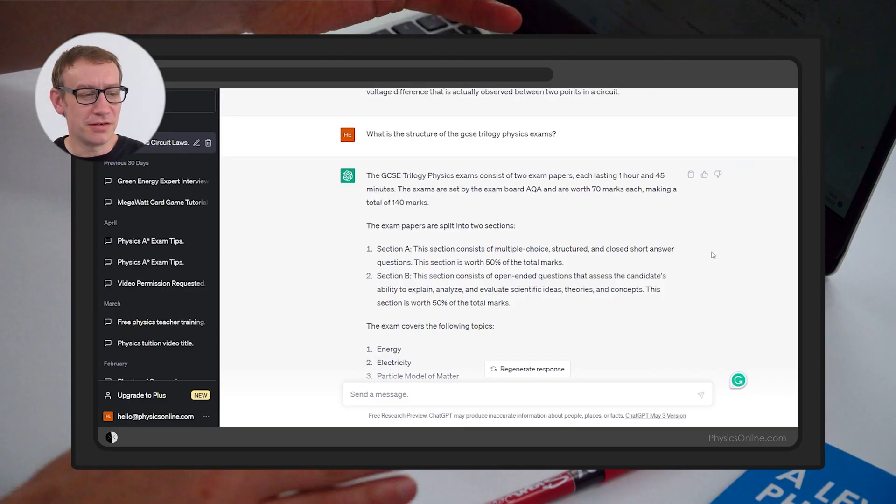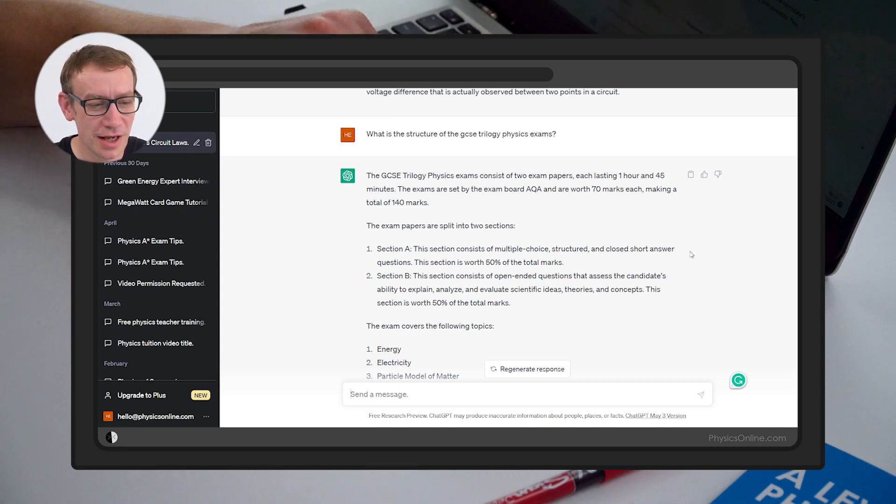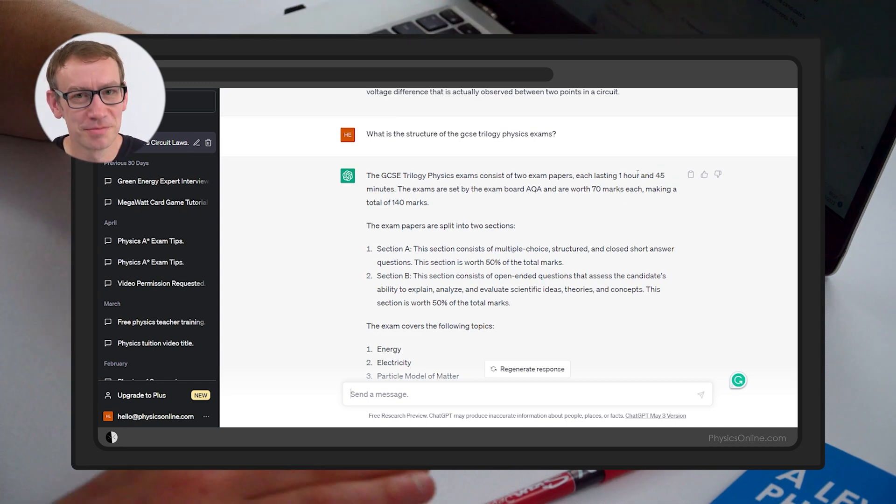Let's see what the AI says. What it says is that the GCSE trilogy physics exams consist of two papers. Yep, that's true. Each lasting one hour and 45 minutes. That is not true. Trilogy they are one hour 15. It's only if you're doing separate physics that they're one hour 45.